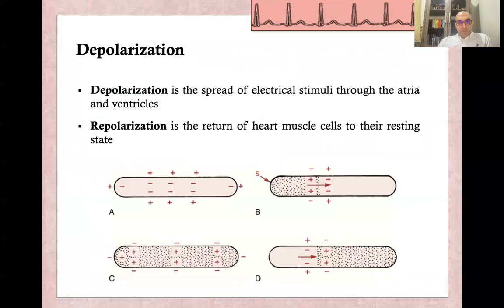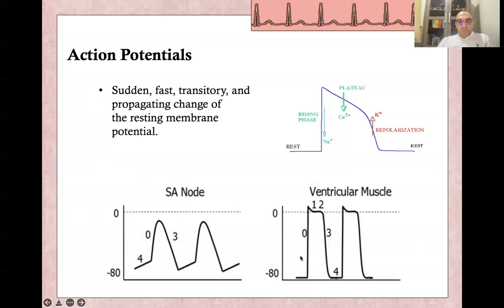What is depolarization? Depolarization is the spread of electrical stimuli through the muscle membrane itself. Repolarization is the return of heart muscle cells to their resting state. If we measure depolarization and repolarization for each muscle cell, we obtain the action potential, which consists of depolarization, a plateau, and repolarization.